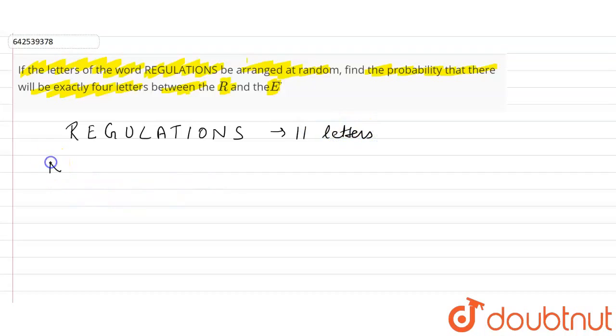The number of ways of arranging these 11 letters is 11 factorial. Now talking about favorable ways,